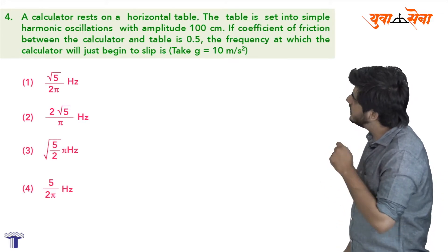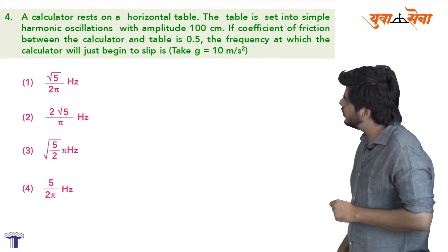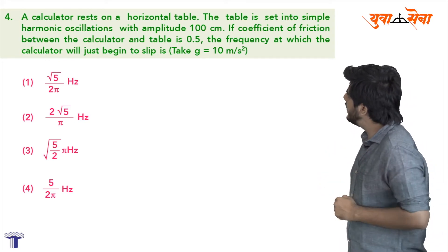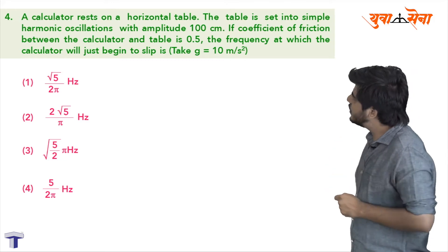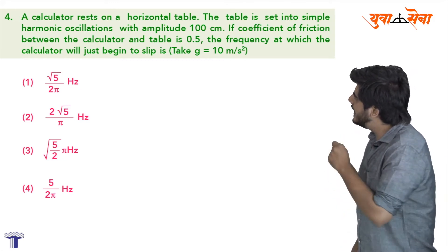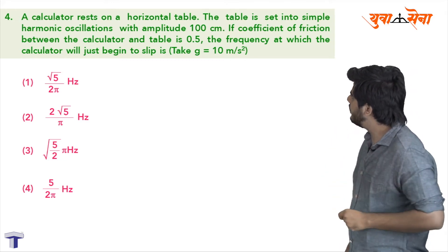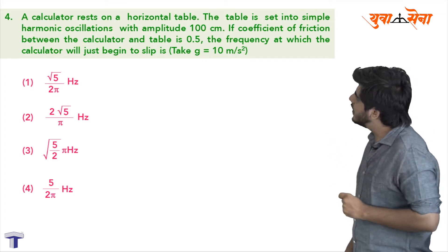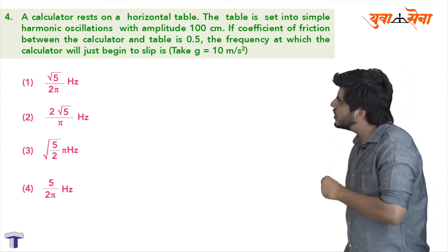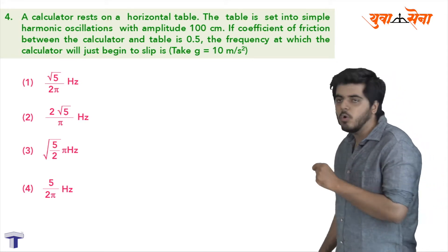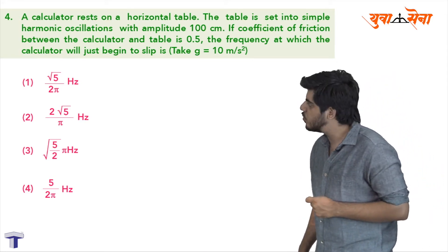The table is set into simple harmonic oscillation with amplitude 100 centimeters. If the coefficient of friction between the calculator and the table is 0.5, find the frequency at which the calculator will just begin to slip. Take g equals 10 meters per second squared.